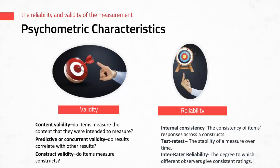First, content validity is the idea of whether the items measure the content they are intended to measure. Face validity is whether the measurement appears to measure what it's supposed to measure. Content and face validity are usually established through an expert validation panel. Then there's predictive or concurrent validity — do the results correlate to similar results? For example, if developing a personality instrument, you'd want its results to correlate with those of a major personality instrument such as the MMPI.